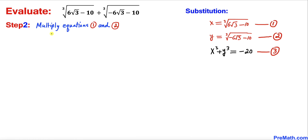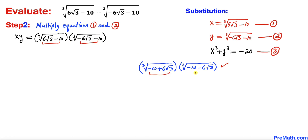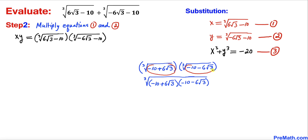Next, we multiply equations 1 and 2. We can write xy equals the cube root of (6√3 − 10) times the cube root of (−6√3 − 10). Focusing on the right-hand side, we place both radicands under a single cube root, and we recognize this as a product of a sum and a difference.